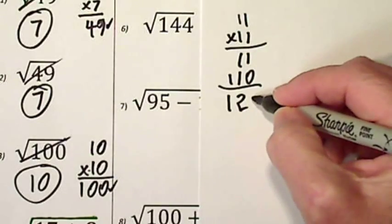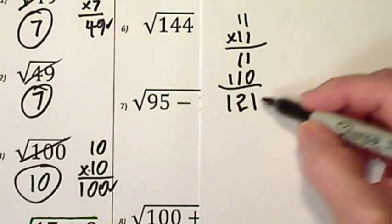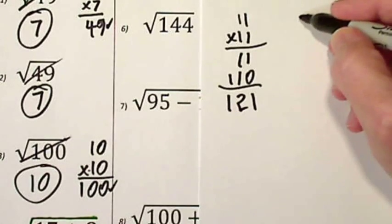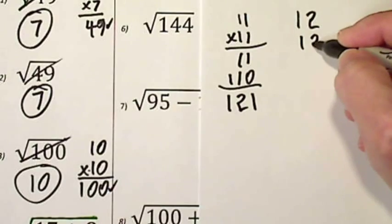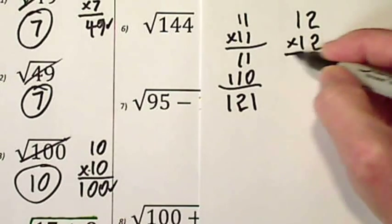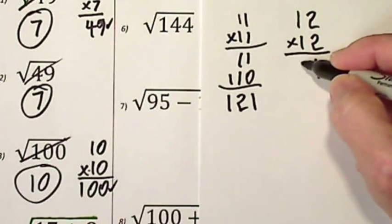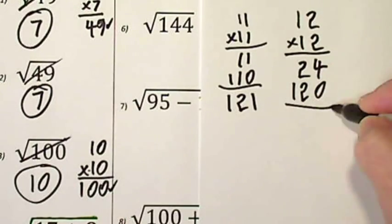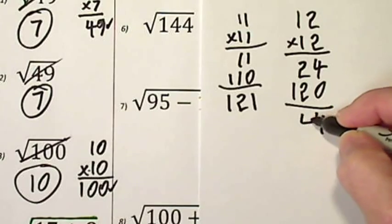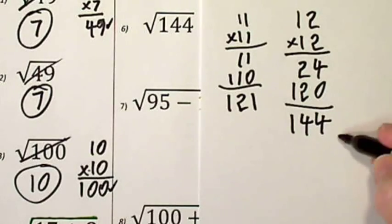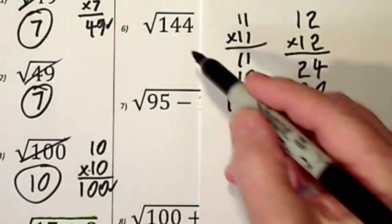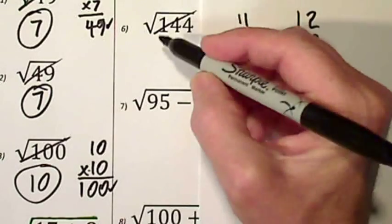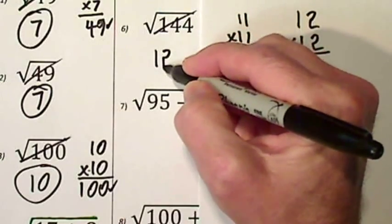That gives you 121. That's not what we seek. Try 12 times 12. So the square root of 144 is 12.